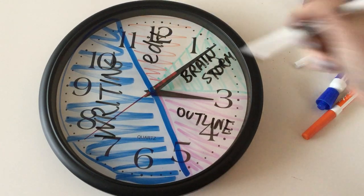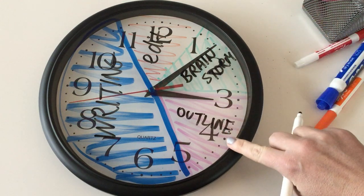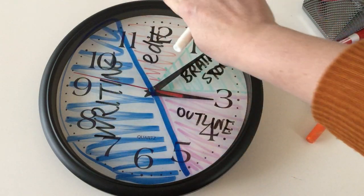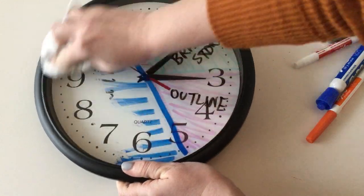This is going to show, as that minute hand goes: right now I know I should be in brainstorming; when it's 3:20 I should be outlining; when it's 3:45 I should be writing; and then I should be editing. It's going to show that whole process. So let's do one more example of how we can use this.